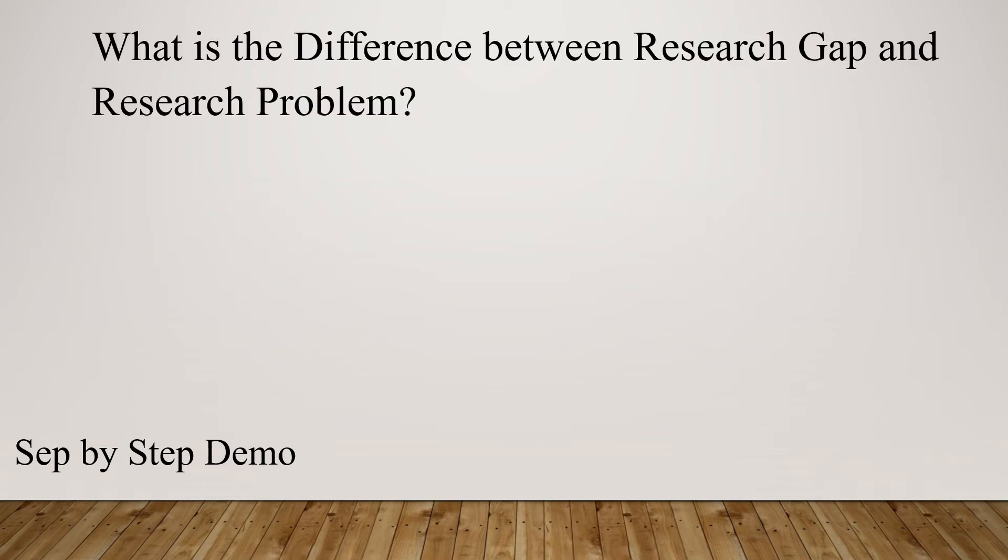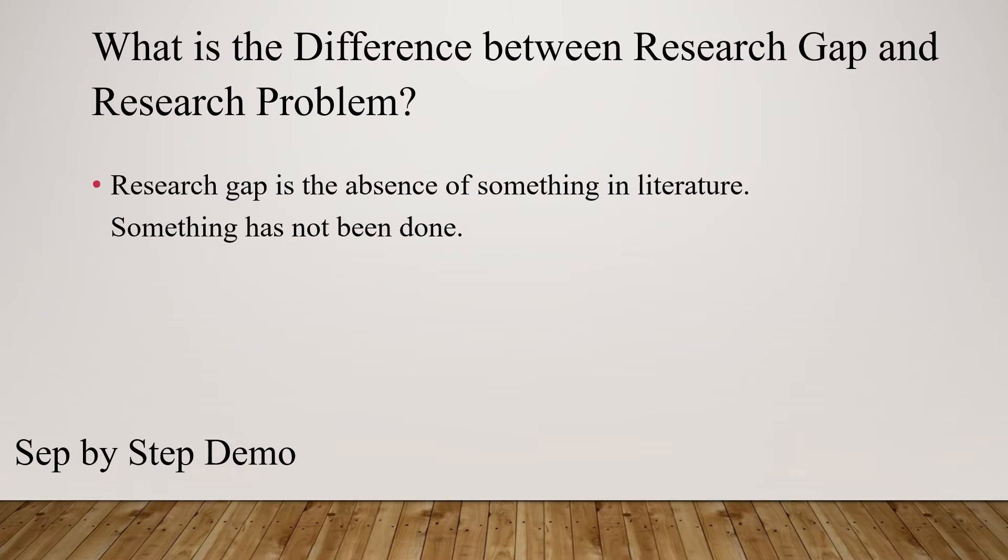So what's the difference between research gap and research problem? Research gap is the absence of something in literature, something that has not been done. On the other hand, a research problem is what the absence or the gap causes.